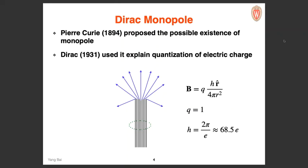What I'm showing here is the Dirac string — you want to hide this string, and then doing quantum mechanics around it you can potentially explain the quantization of charge. The magnetic field goes like 1/r², and the corresponding magnetic coupling is 2π/e. That coupling is large, so you can't do perturbative calculations. Also, when you calculate the total energy — integrating B² ∝ 1/r⁴ with an r² dr measure — it diverges as r→0, so the energy of the Dirac monopole state is not finite.